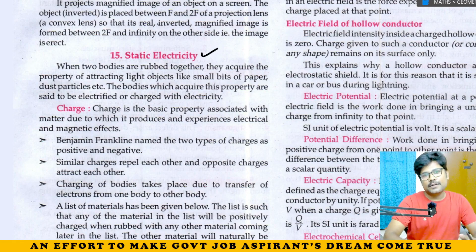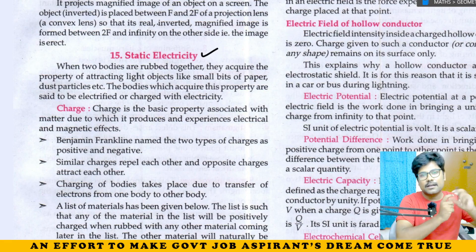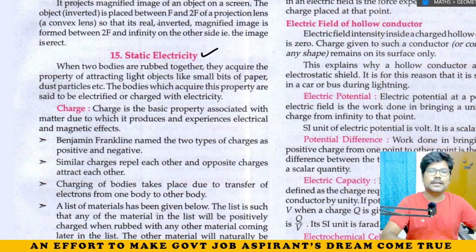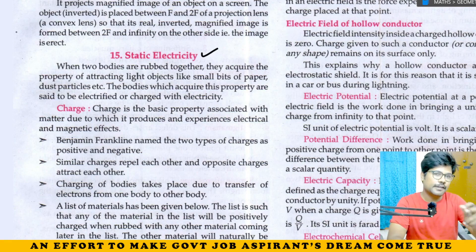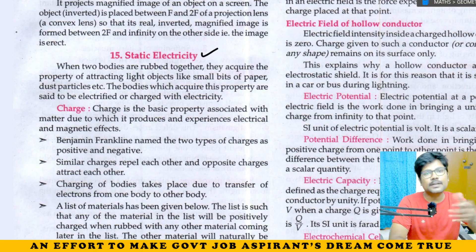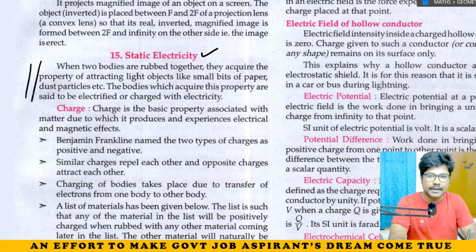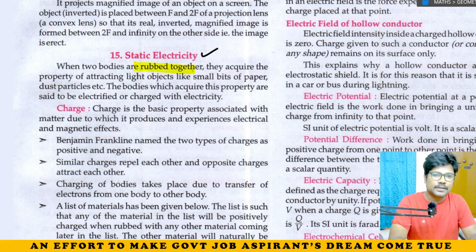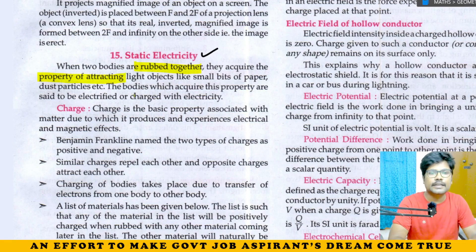When two bodies are rubbed together, a light attracting force develops. When a light attracting force develops, we say electricity has developed. Two bodies rubbed together acquire the property of attracting light objects — bits of paper, dust particles and the like. Because they are rubbed like this, they are said to be electrified or charged with electricity.